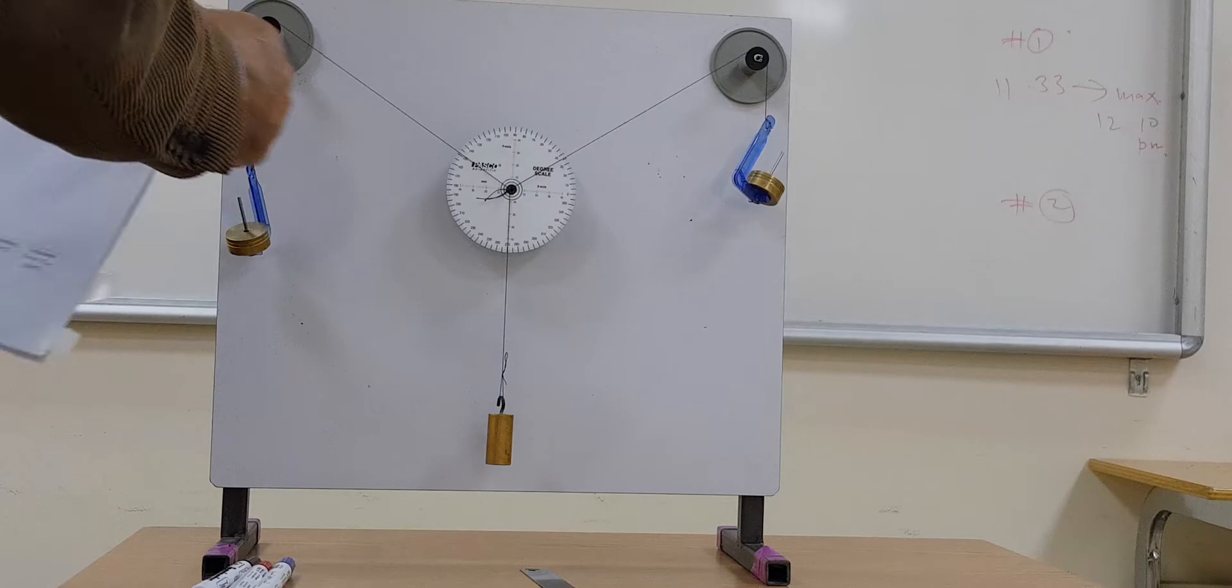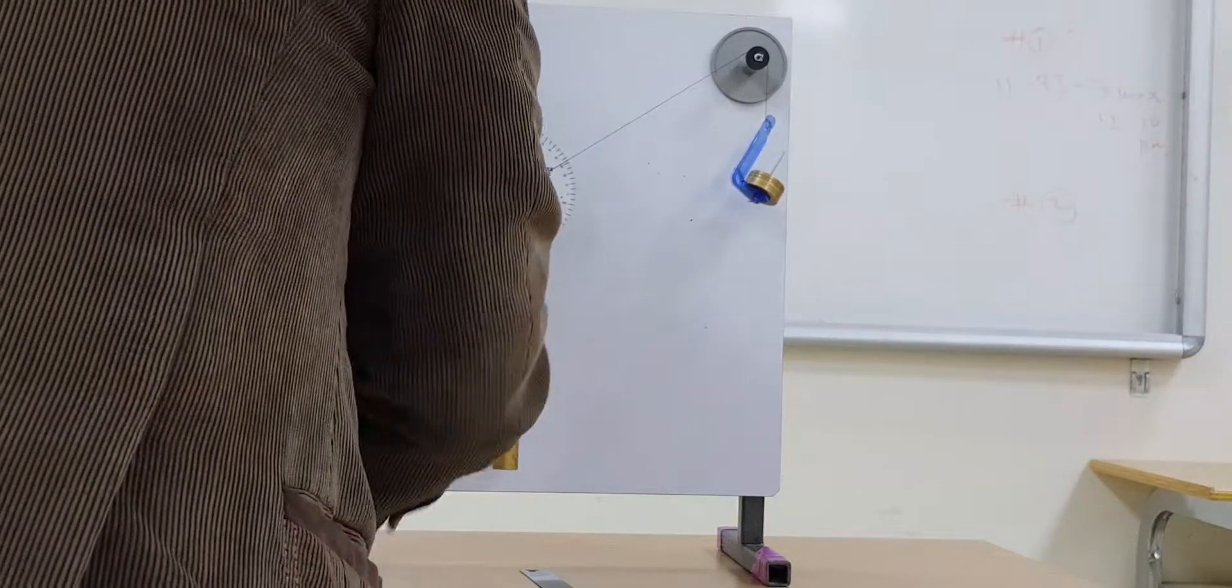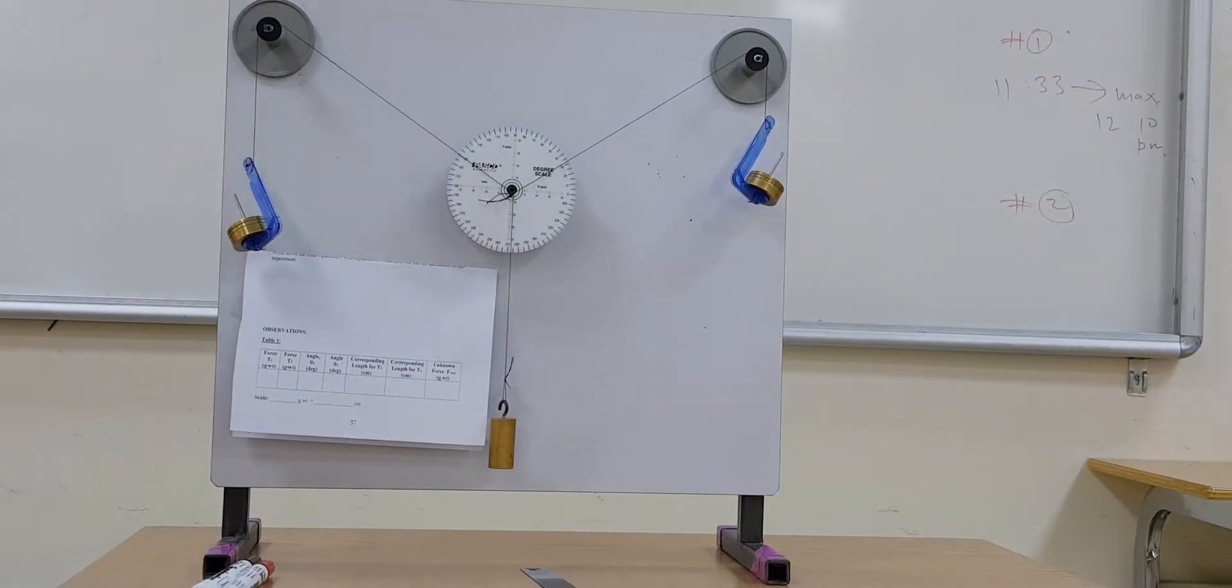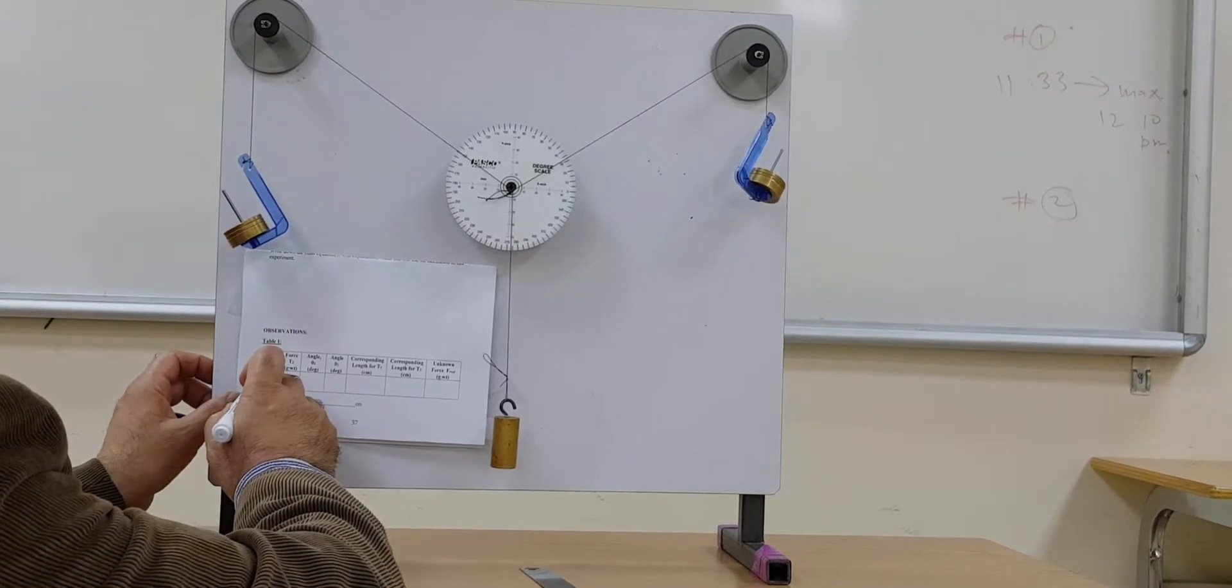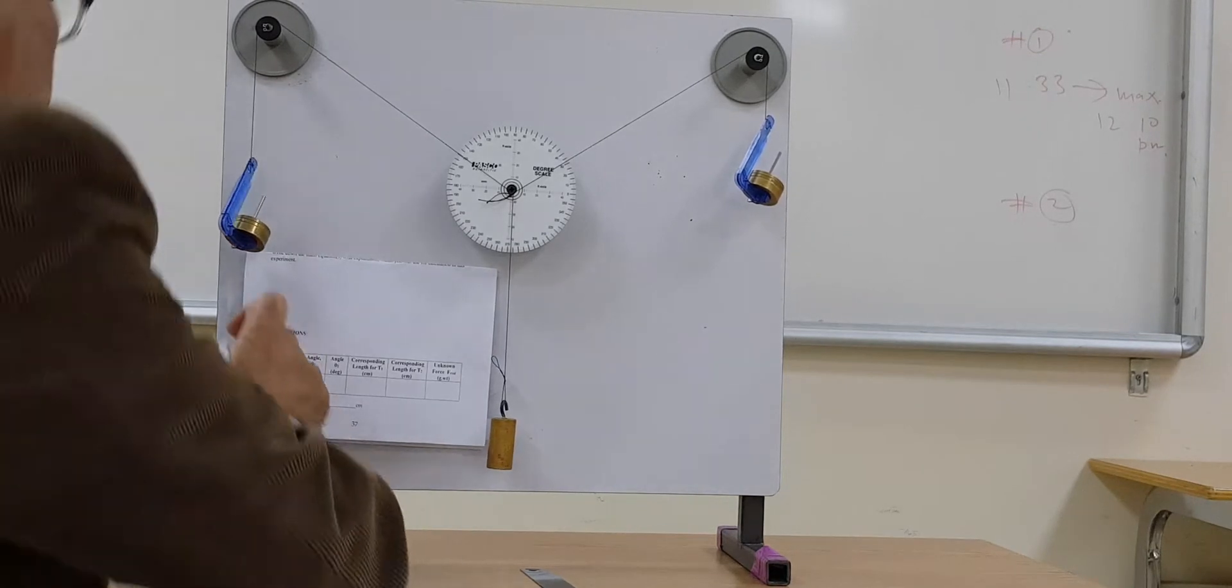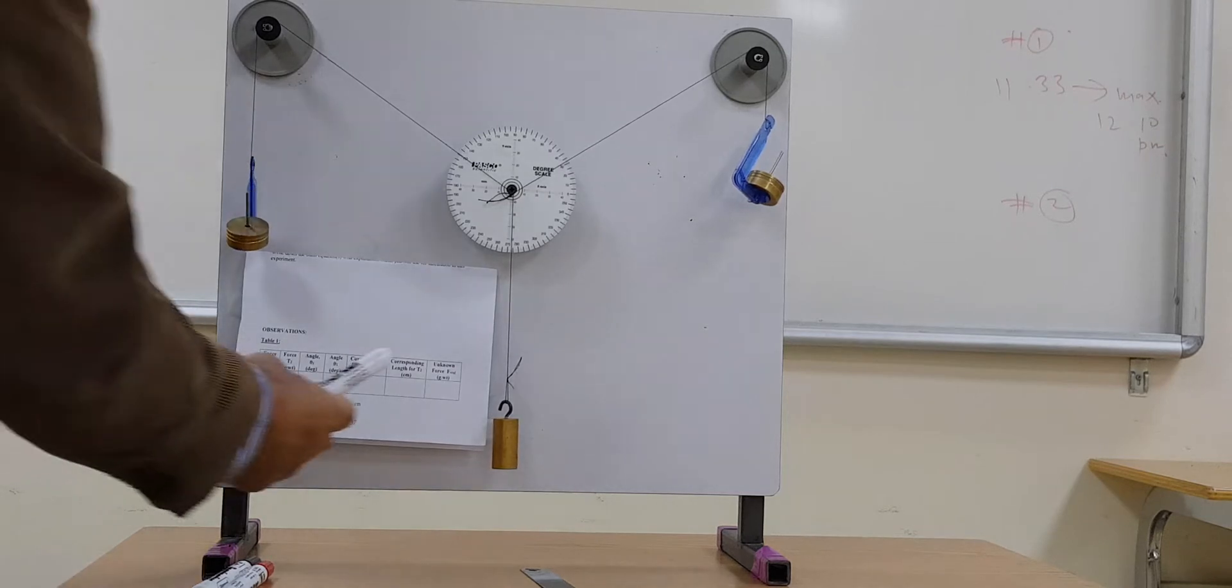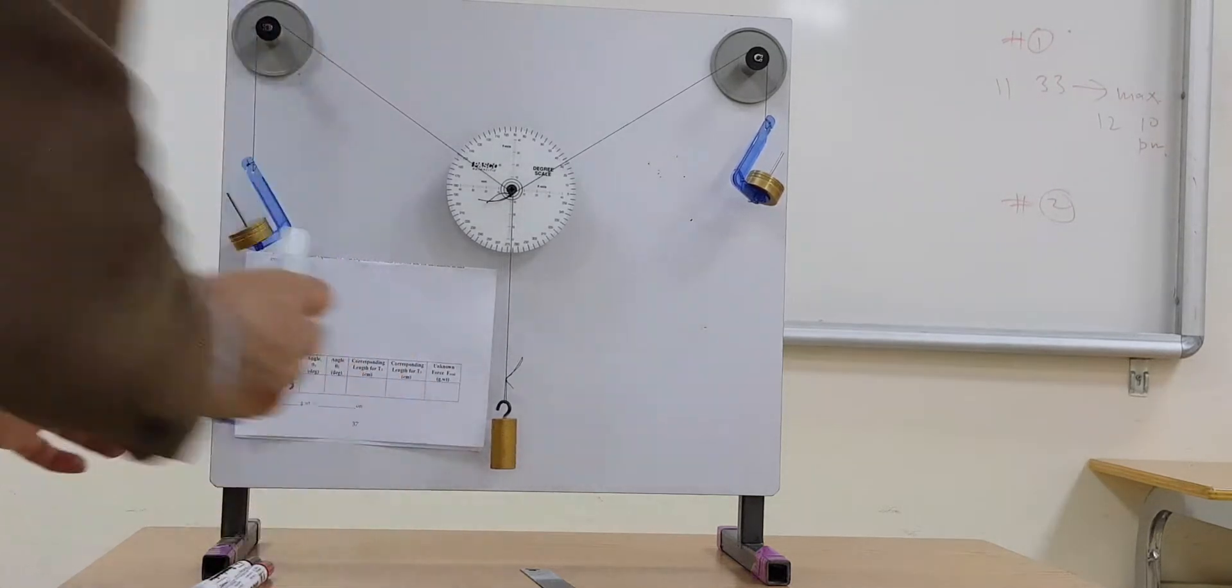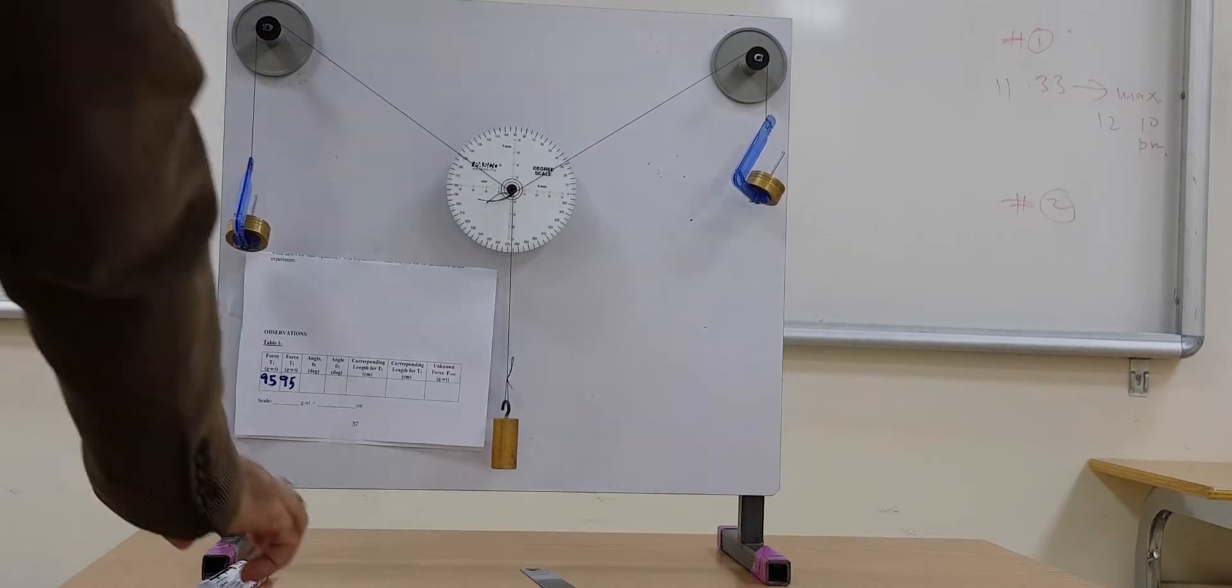For example, if you have this one here, I will write their masses. I'll write 95 grams here, 95 grams here, so both of them are 95 grams.